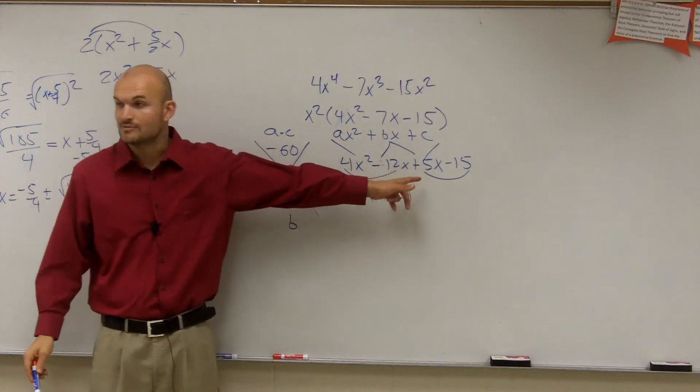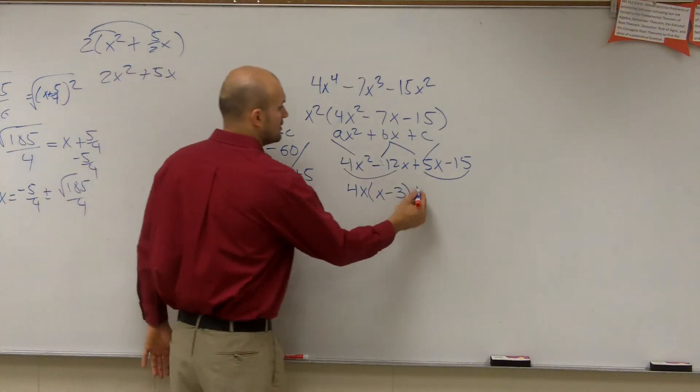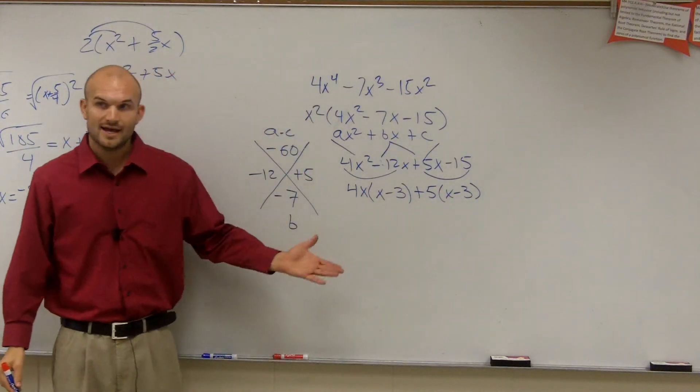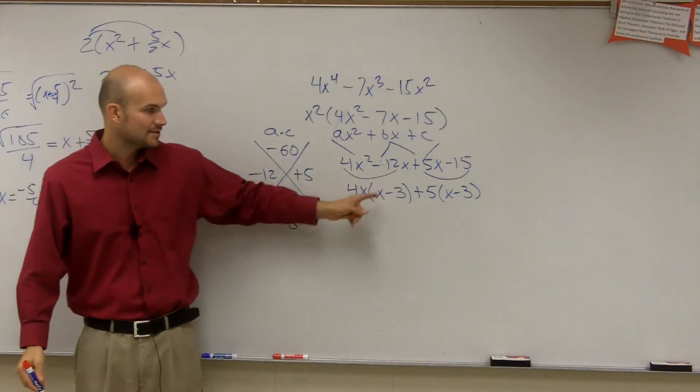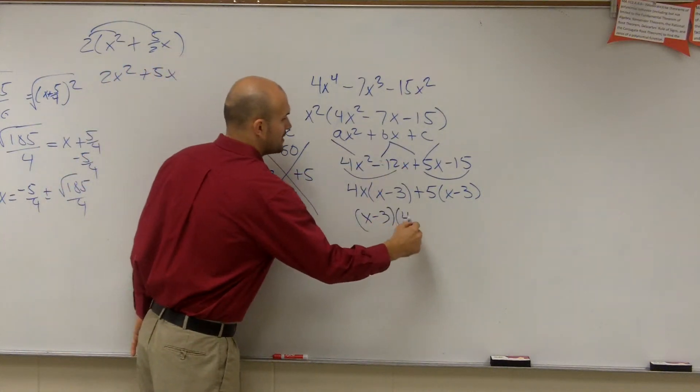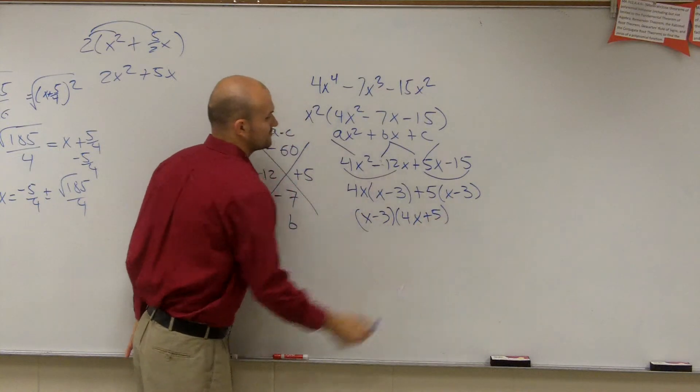My last two terms, I can factor out a positive 5, 5 times x minus 3. Then you factor out what they have in common, which is an x minus 3. And you're left with 4x plus 5.